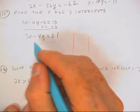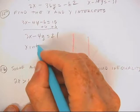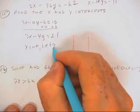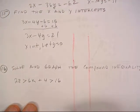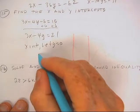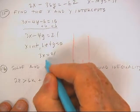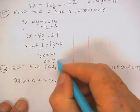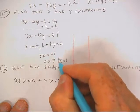To find the x-intercept, let y be 0. So you get this, which is the point (7, 0).